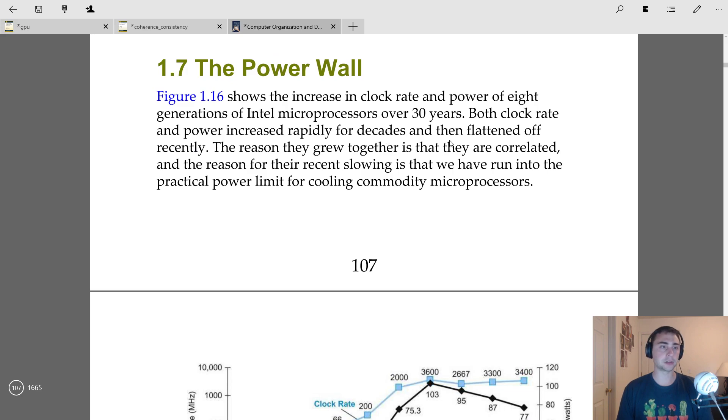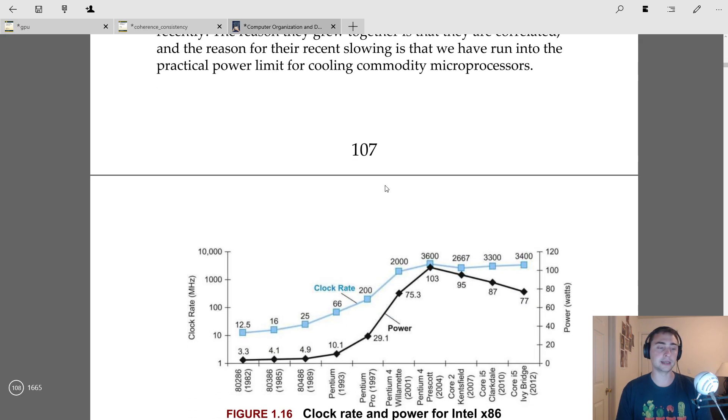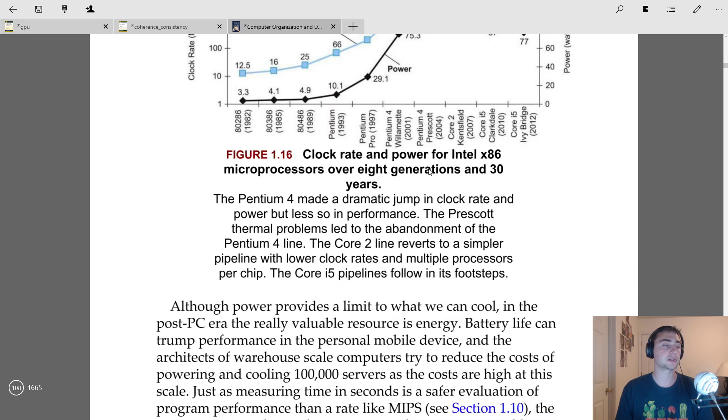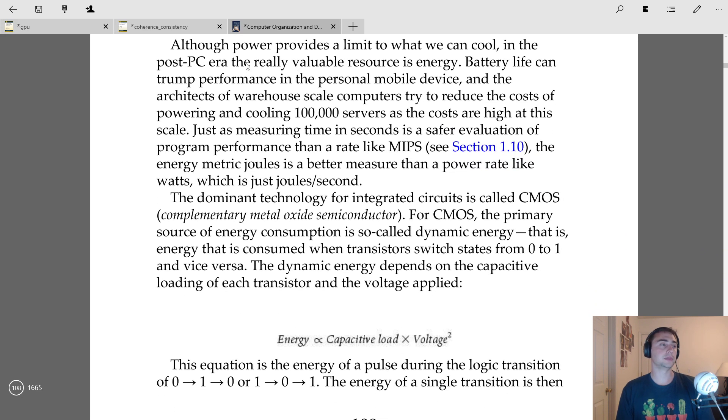The reason these things grow together is because they're correlated, and the reason for the recent slowing that we can see post-2004, where we basically have no increase in frequency and even a decrease in some cases and a decrease in power, is because we run into a problem which is a practical power limit for cooling commodity microprocessors. Power provides limits on what we can cool, of course.